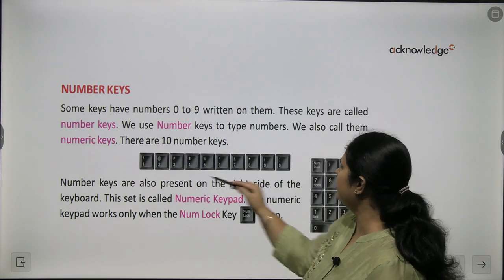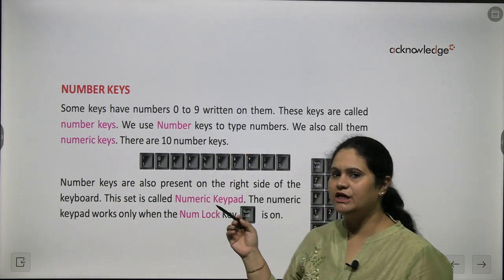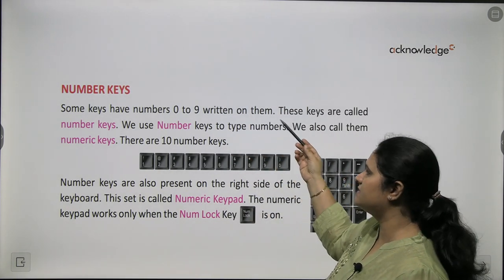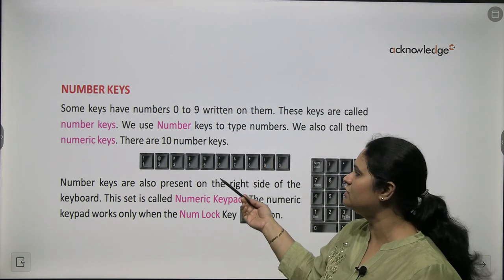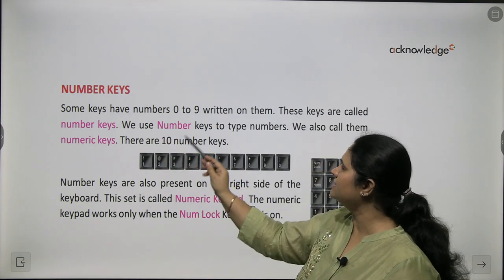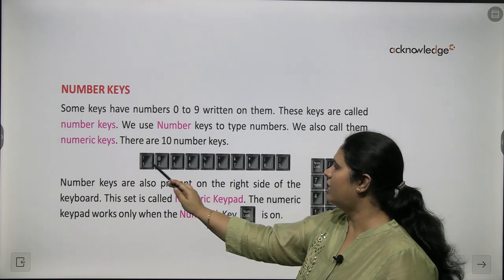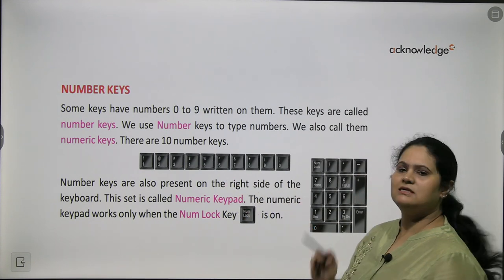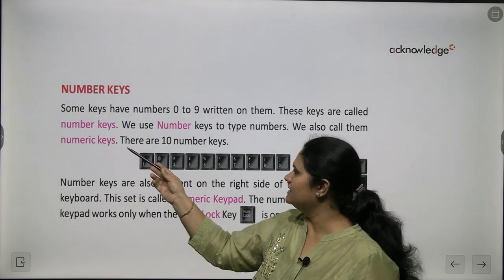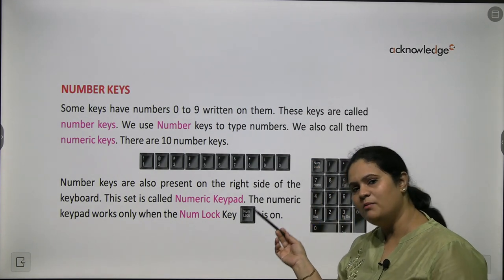First of all, what we see here are number keys. You know about numbers — 0 to 9. These are the digits, and for writing these digits on the computer, we use these number keys. Some keys have numbers 0 to 9 written on them: 1, 2, 3, and so on up to 0. All these numbers are written here, and these keys are called number keys.